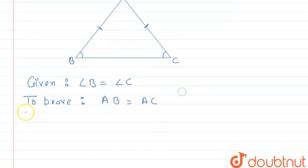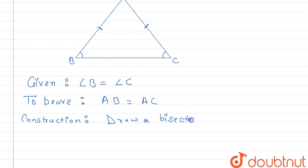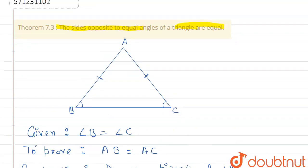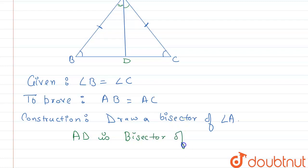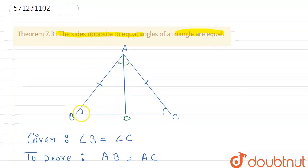Now let us make the construction. Draw a bisector of angle A, and let us name it AD. Since AD is the bisector of angle A, the bisector divides angle A into two equal halves. Let angle BAD equal angle 2 and angle CAD also equal angle 2. Angle B is labeled angle 1 and angle C is also angle 1, as given.